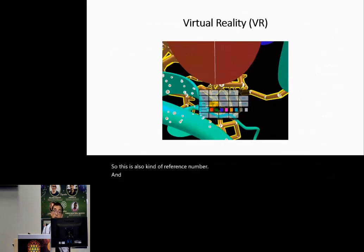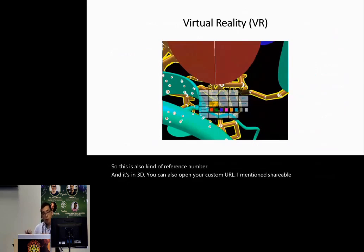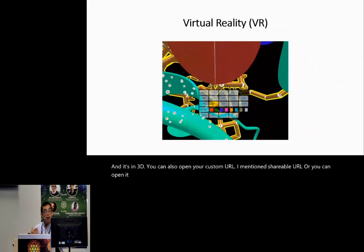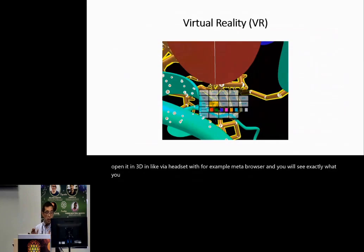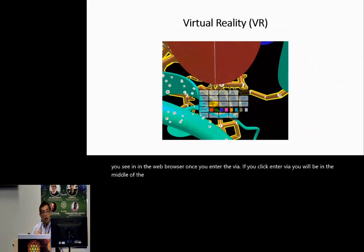In ICN3D, you can open a custom URL or a shareable URL, or you can open ICN3D in a VR headset — for example, with a Meta browser. You will see exactly what you see in the web browser once you enter VR. If you click Enter VR, you will be in the middle of the protein. You can zoom in and out, change color, do selection, or do analysis in VR.